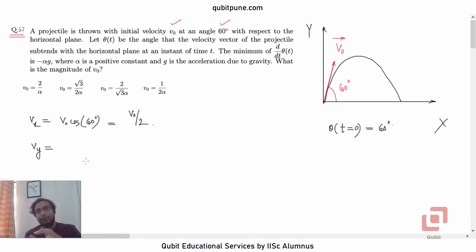What about vy? Use v equal to u plus at. So, it will be v0 sin 60, the vertical component of velocity v0 minus gt. The negative sign is because acceleration is acting downwards and our body is initially moving upwards. So, that is v sin 60 minus gt or root 3 v0 bar over 2 minus gt.